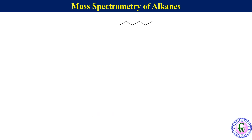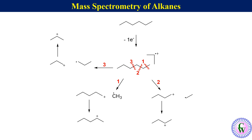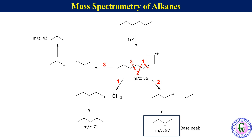Mass fragmentation of hexane: removal of an electron gives the molecular ion. Cleavage of the C1–C2 sigma bond gives a methyl radical and a pent-1-yl carbocation, which rearranges to a more stable secondary carbocation. Breaking the C2–C3 sigma bond gives a but-1-yl carbocation and an ethyl radical; the but-1-yl carbocation rearranges to a more stable secondary carbocation. Cleavage of the C3–C4 bond gives a prop-1-yl radical and a prop-1-yl carbocation, which rearranges to a secondary carbocation. The respective m/z values of these ions are 86, 71, 57, and 43.